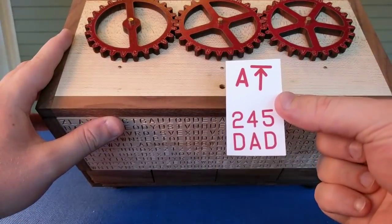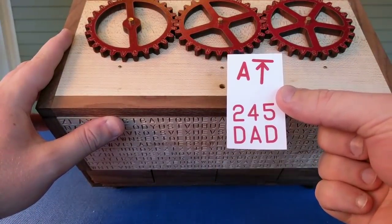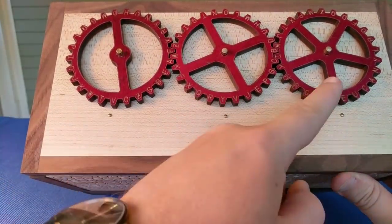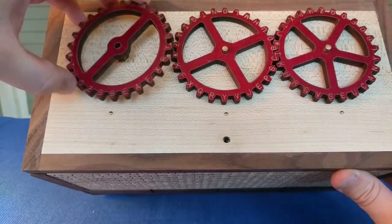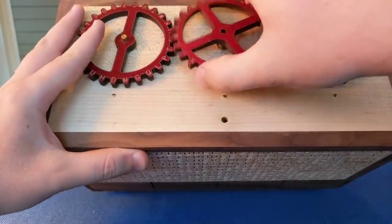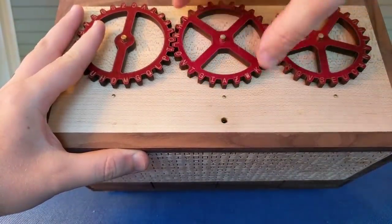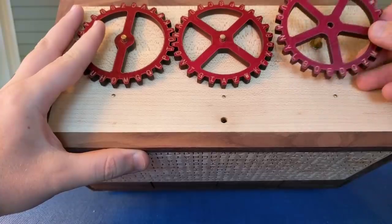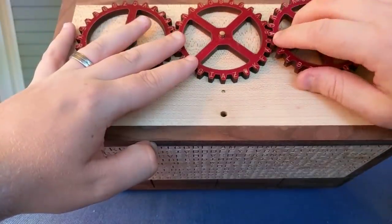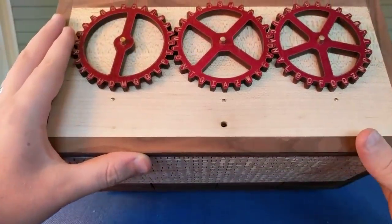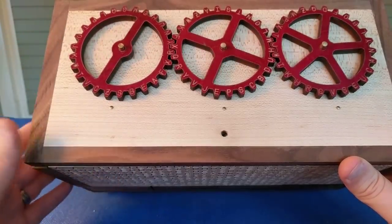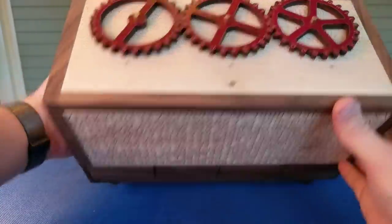And if you were to take 245 Dad, that's giving him the hint to set the gears up as 2, 4, and 5, and to line them up with the word Dad initially pointing at the pins. So that this combination is the one that's going to be able to decode a message for him. Well, that doesn't necessarily help yet.